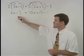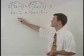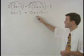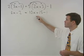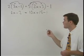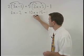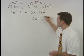Notice that the left side of the equation cannot be simplified any further. But on the right, 10x plus 15 minus 1 can be simplified to 10x plus 14.